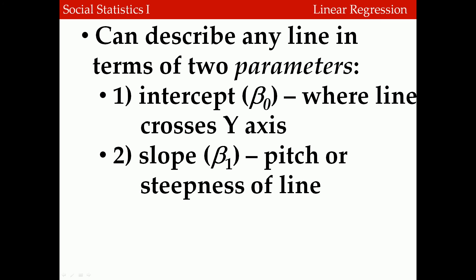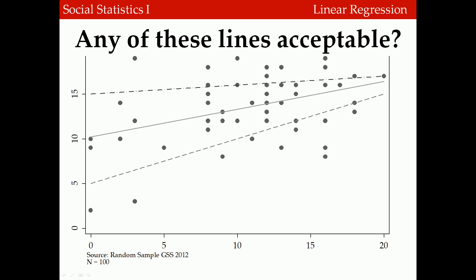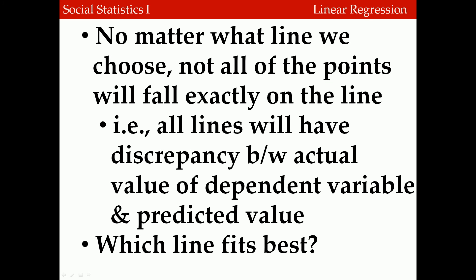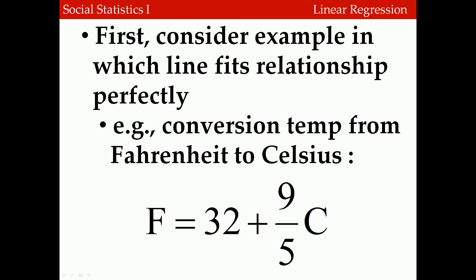We can describe any line in terms of two parameters: its intercept beta 0, where it crosses the y-axis, and its slope beta 1, which describes the pitch or steepness of the line. Regardless of which line we pick, not all the points will fall exactly on the line. There will be discrepancy between the actual values of the dependent variable and the predicted values for any given case.